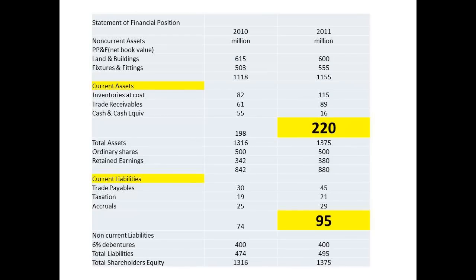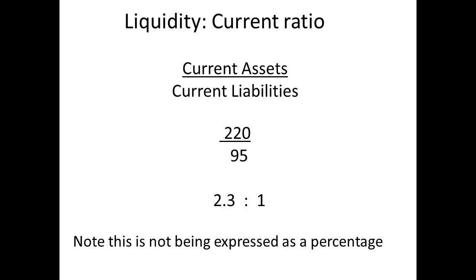Current assets are shown as £220 million and current liabilities are shown as £95 million. Substituting into the ratio: 220 divided by 95 gives a result of 2.3 to 1. Note that we are not using a percentage here but expressing it as a typical ratio.